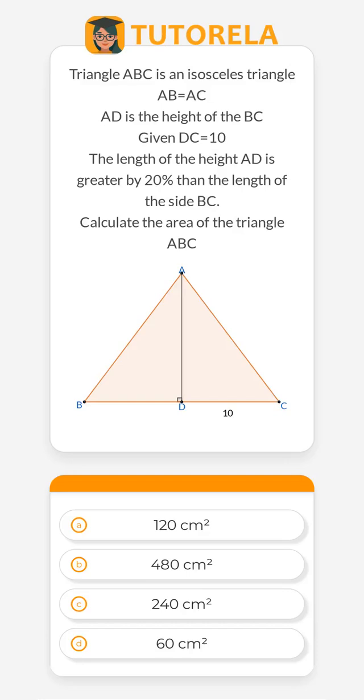Triangle ABC is an isosceles triangle where AB equals AC. AD is the height of BC. Given that DC equals 10, the length of the height AD is greater by 20% than the length of side BC. Calculate the area of triangle ABC.